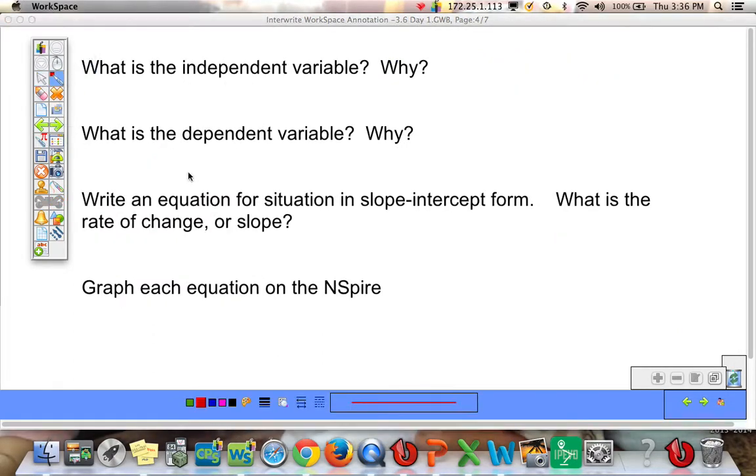All right, so here it is. The independent variable would be the number of months that you are on the contract. And the dependent variable would be the cost. And why is cost the dependent variable? Well, it depends on how many months you have the phone and you have the contract.